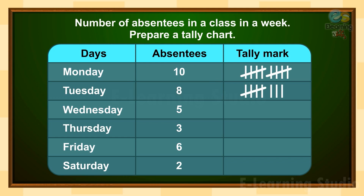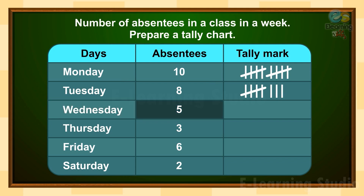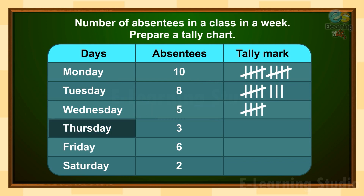Our next day is Wednesday and the absentees number is 5. For 5, first we will draw 4 vertical lines: 1, 2, 3, 4, and then make a slanting line for 5. Next day is Thursday and the number is 3. For this we will make only 3 vertical lines: 1, 2, 3.